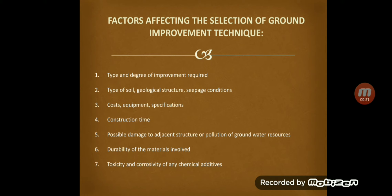Cost and equipment specification also includes experienced contractors, specification of work, and guidance documents. Next is construction time — that is, the time available for construction and the use of accelerated construction equipment. Number five is possible damage to adjacent structures or pollution of groundwater resources, which includes tolerable levels of loading and deformation and pore water contamination.